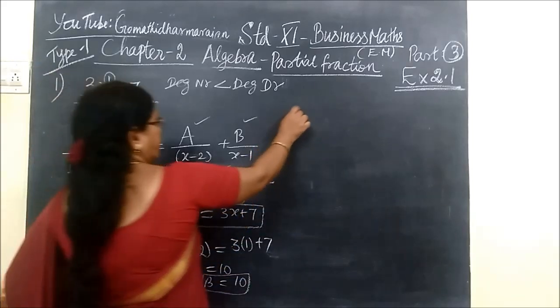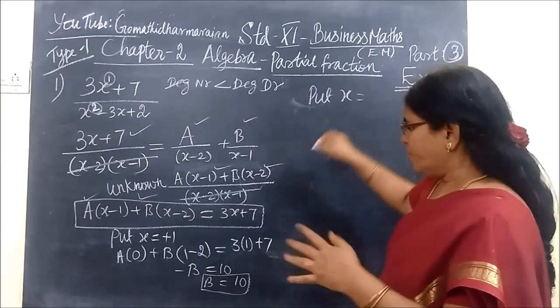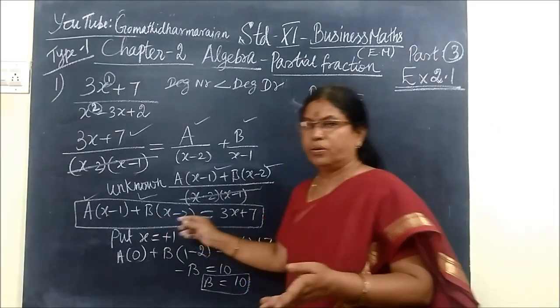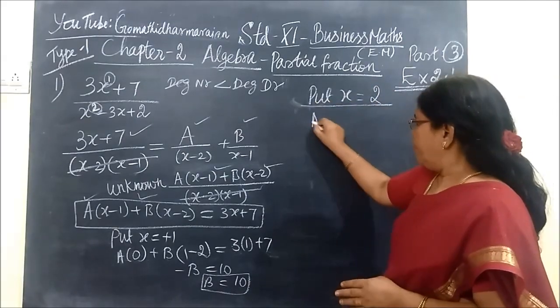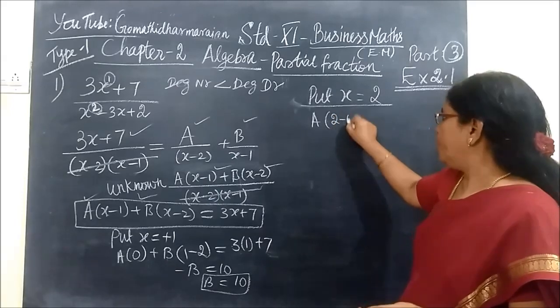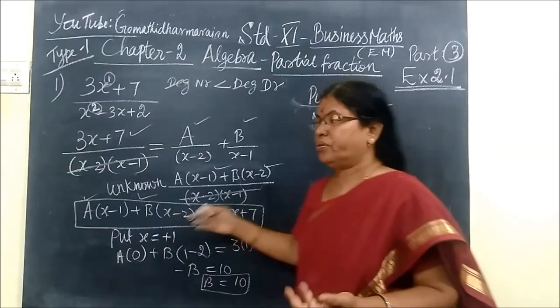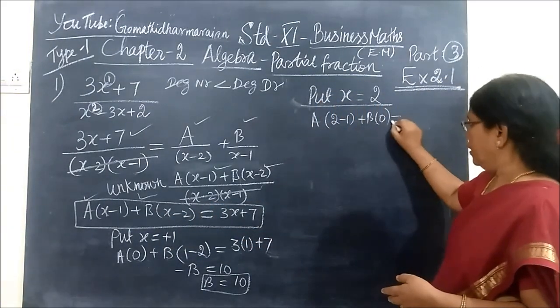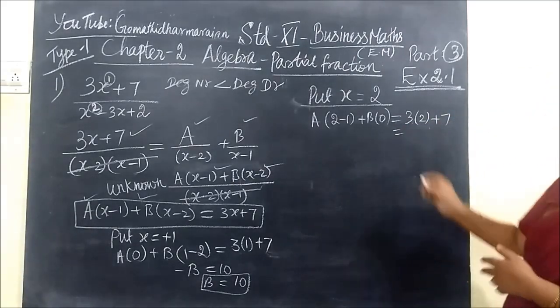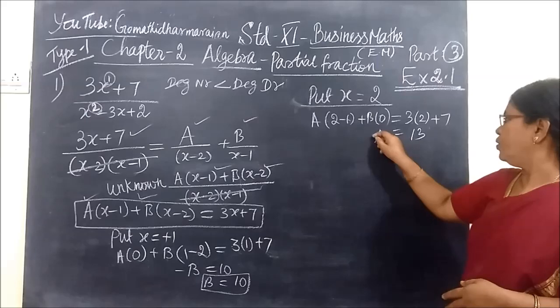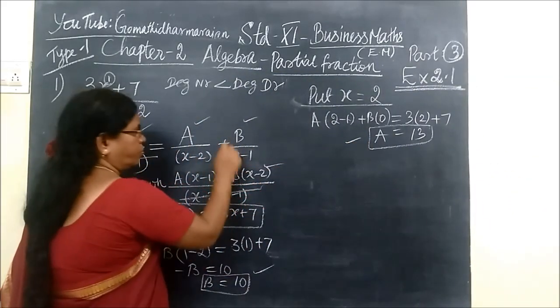Now we want to find the value of A. Put x equal to 2. A bracket, for x you are substituting 2, so 2 minus 1. B bracket zero because 2 minus 2 is zero. Equal to 3 bracket 2 plus 7, so 3 times 2 is 6 plus 7 is 13. A is 13.